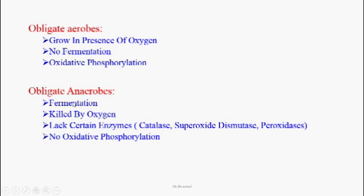Obligate anaerobes always produce ATPs by fermentation. Oxygen is toxic to obligate anaerobes — they cannot grow in the presence of oxygen. Most obligate anaerobes lack the enzymes catalase, superoxide dismutase, and peroxidases, which depend upon oxygen. There is no oxidative phosphorylation in obligate anaerobes; they always produce ATPs by fermentation.